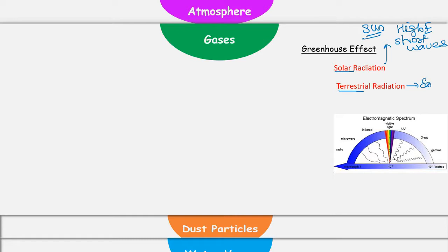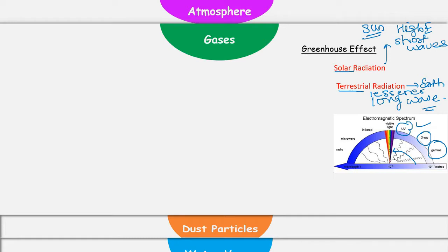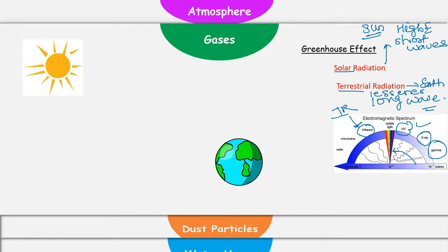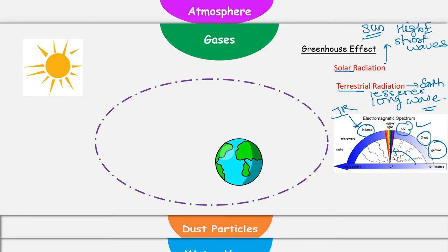Whereas terrestrial radiations are emitted by Earth and they have less energy and long wavelength. If you look at this electromagnetic spectrum, you will find solar radiations which have very high energy like ultraviolet radiation, X-rays, and gamma rays. These all short waves are traveling towards Earth and are emitted by sun. Terrestrial radiations are falling in the category of infrared radiations. Now let's see what exactly is happening and how and when Earth is emitting terrestrial radiations. So between sun and Earth, there is something called atmosphere.